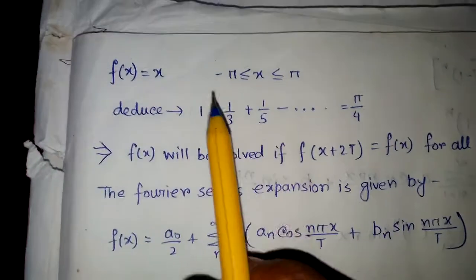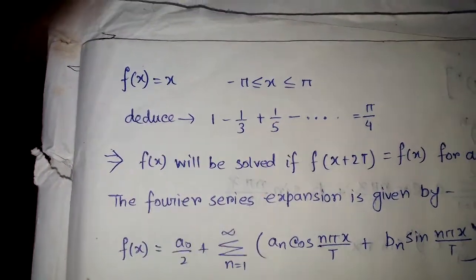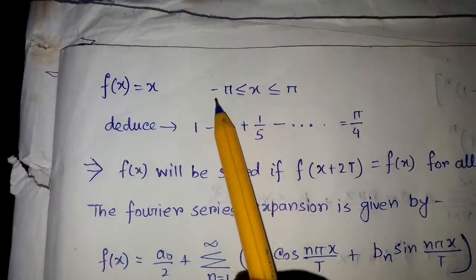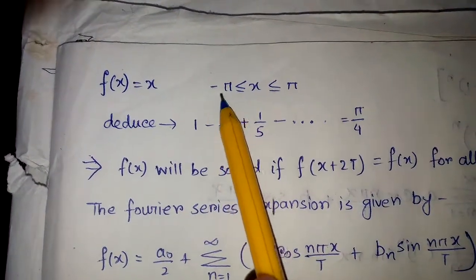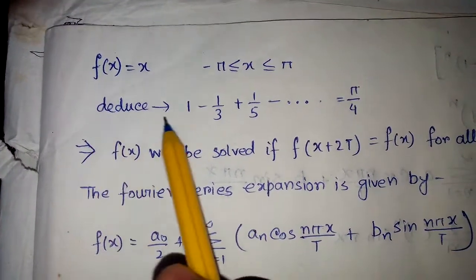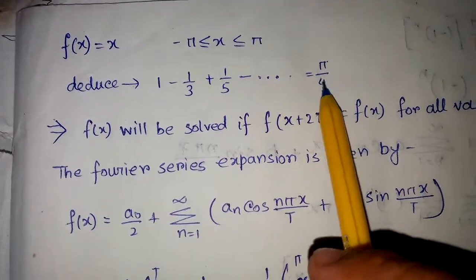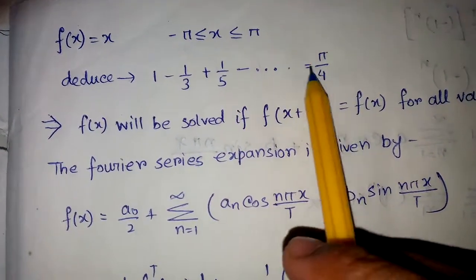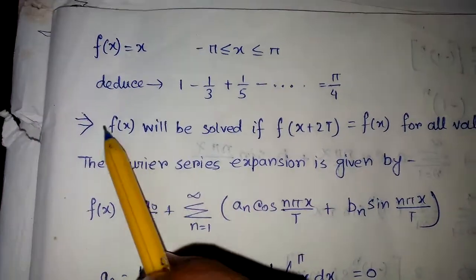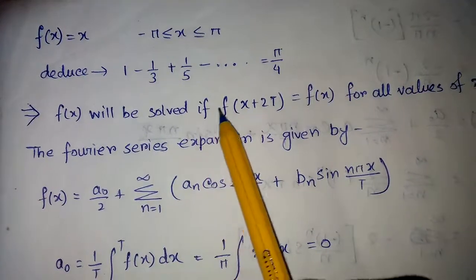Let's take an example of the Fourier series. Here we have chosen the function f(x) = x on the interval minus pi to pi. The question asks us to deduce that 1 minus 1/3 plus 1/5 minus ... equals pi by 4. So this is the result we need to show.